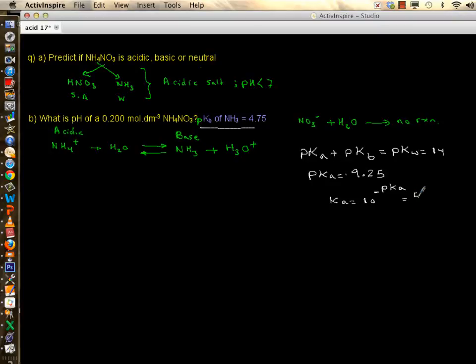Now I have almost all information to attack this. Let's do an ICE table. Initially you have 0.20, none of ammonia, none of hydronium. There is a change, x mole of reactant goes away, x moles of each of the products come to life. At equilibrium you have 0.2 take away x, and you have x for each of these. If you find x, you know hydronium, and negative log of x is pH.